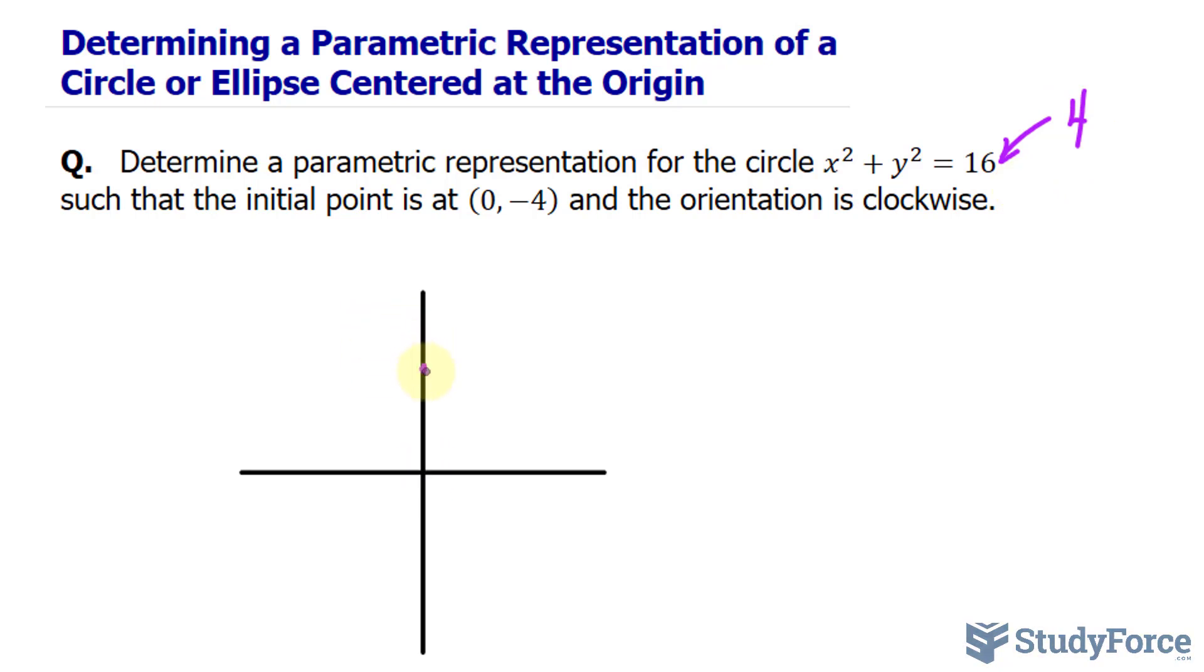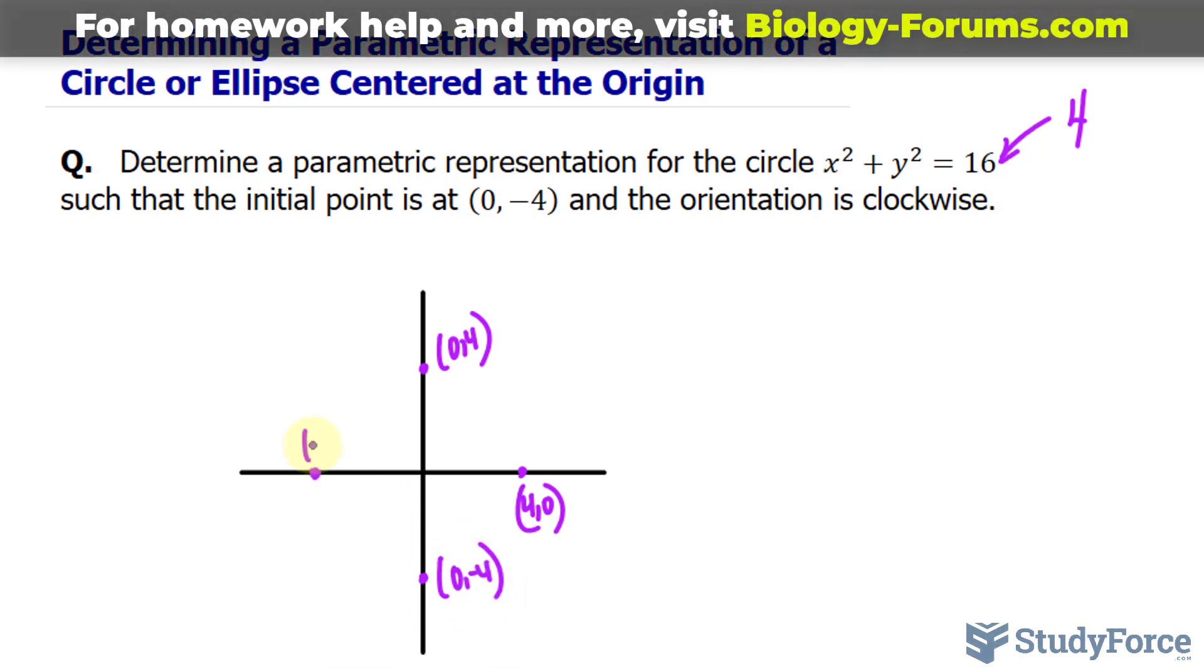We'll have a point up here at 0 and 4, a point here at 4 and 0, our initial point is over here at 0 and negative 4, and a point at negative 4 and 0. Now the question tells us that the orientation is clockwise.